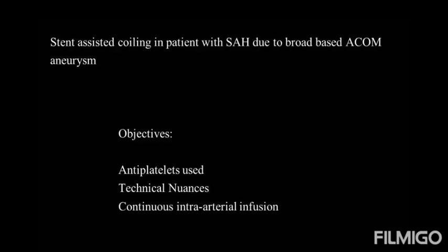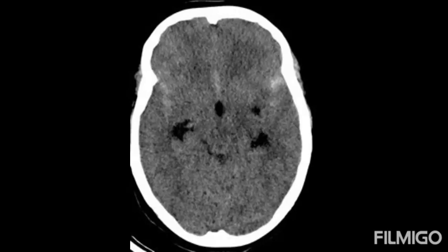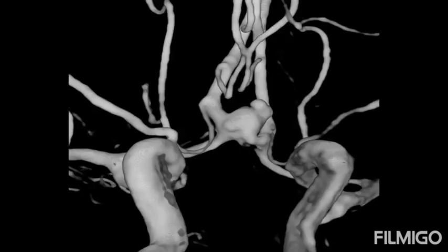Good morning friends. We will discuss stent-assisted coiling in a patient with subarachnoid hemorrhage due to a broad-based ECOM aneurysm. The objectives of the talk include antiplatelet usage in the setting of subarachnoid hemorrhage, technical nuances, and continuous intra-arterial infusion. This is a CT scan of a 50-year-old lady with diffuse subarachnoid hemorrhage and mild hydrocephalus. This is a 3D rotation angiography showing a very broad-based dysplastic ECOM aneurysm with a pseudolobule at the top of the fundus.